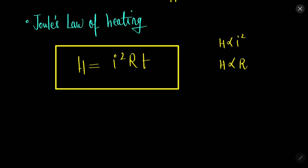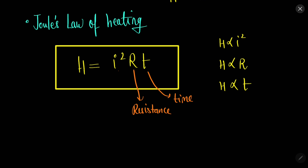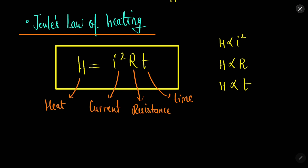More will be the heat with more resistance, and more will be the heat with more time for which the current is flowing. T is the time for which current is flowing, R is the resistance of the conductor, I is the current, and H is the heat produced in the conductor. This is Joule's law of heating — it is quite simple and easy to understand.